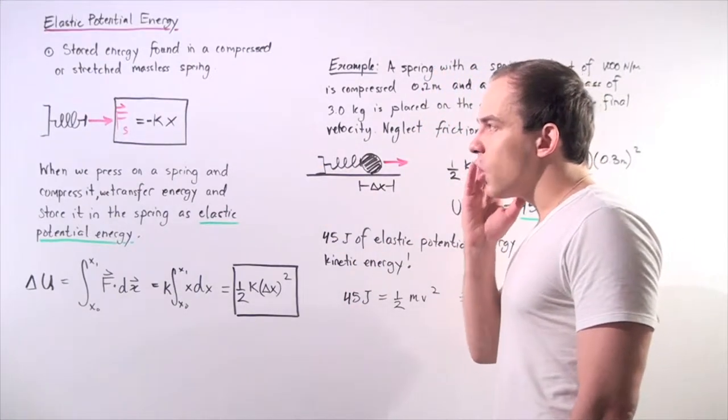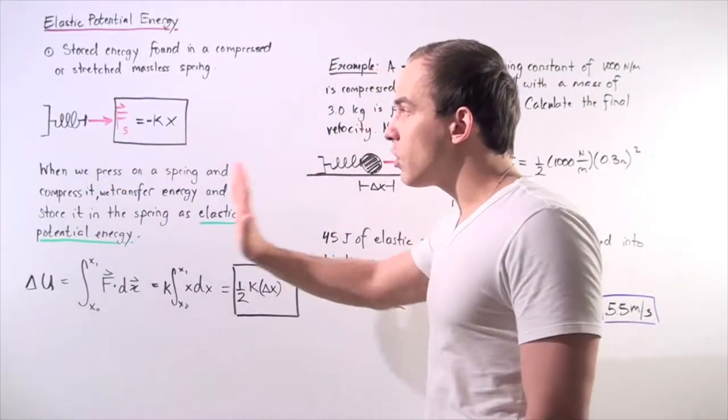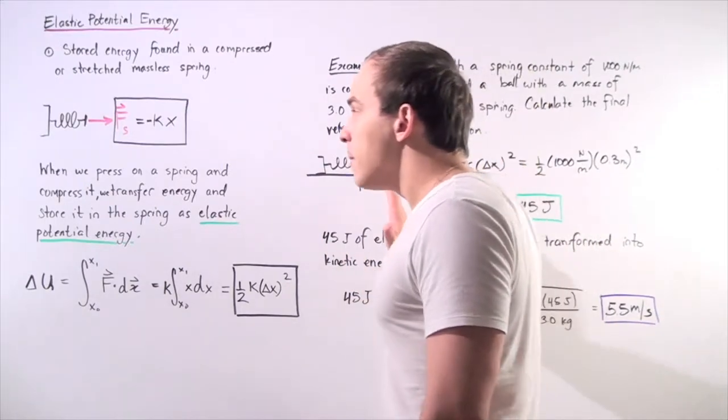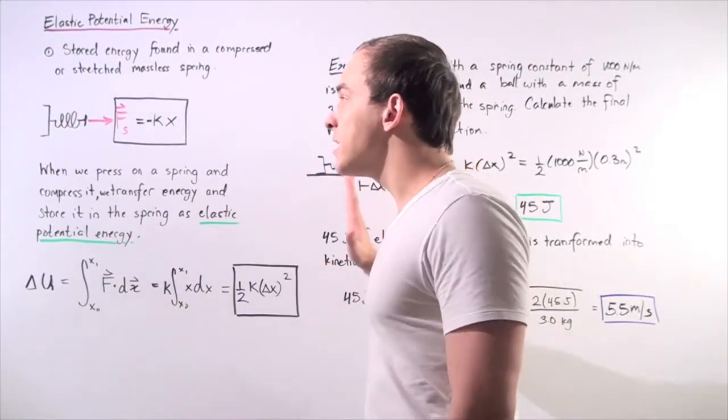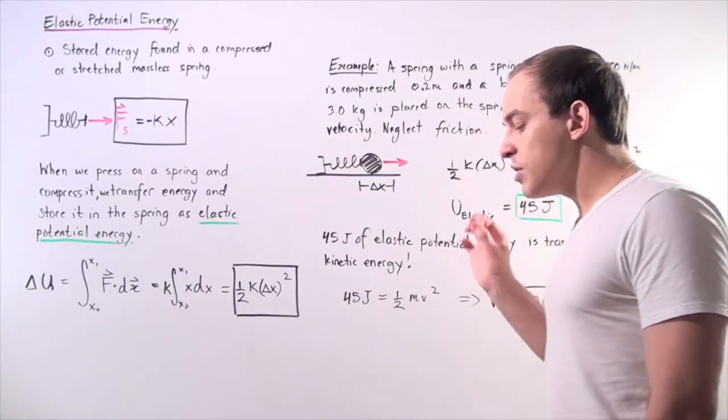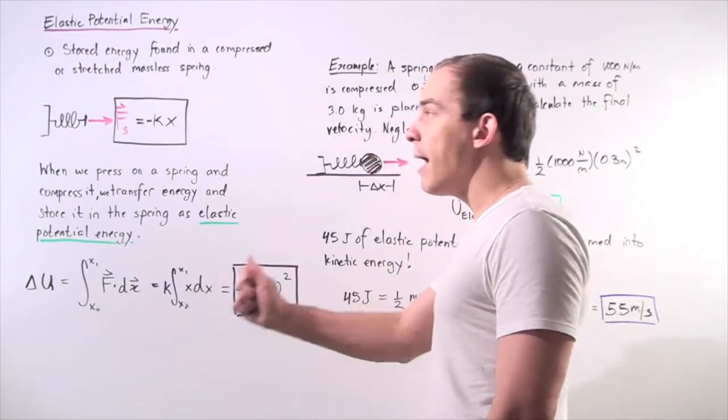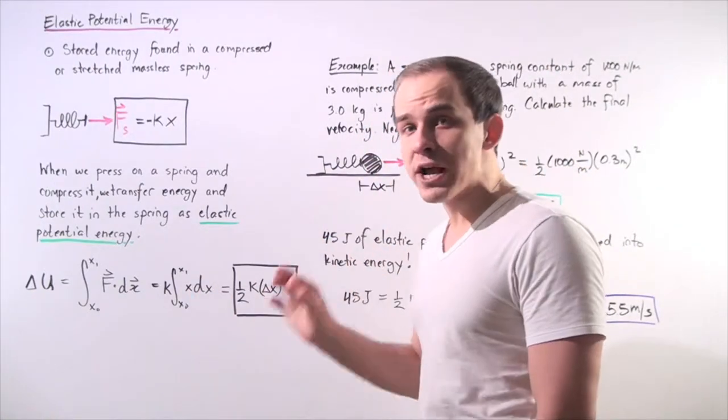Let's suppose that we have the following spring and we apply a force onto our spring. We push the spring, thereby compressing it a certain displacement x. Now the spring will act back. It will create a force that will point in the opposite direction of its compression.